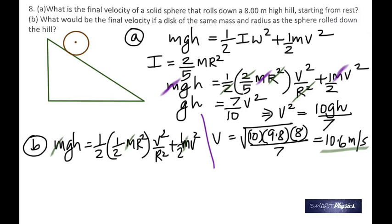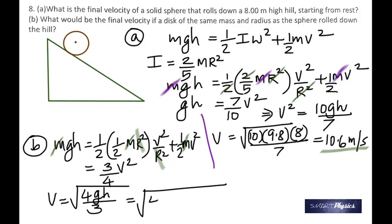Cancel out the terms that we did last time, but here you see 1/4, you see 1/2. 1/4 plus 1/2 is 3/4. When you rearrange that and calculate, you get square root 4gh by 3, which is 4 times 9.8 times 8 by 3, which gives you 10.22 meters per second.